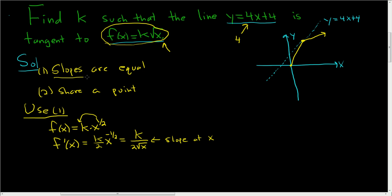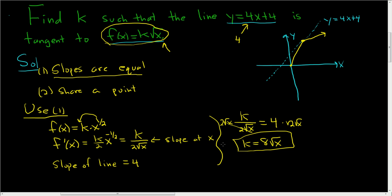Now we know that the slopes are equal. The slope of our line is 4. So if we want the slopes to be equal, we just set k over 2 square root x equal to 4. Multiplying both sides by 2 square root x, we end up with k equals 8 times the square root of x.